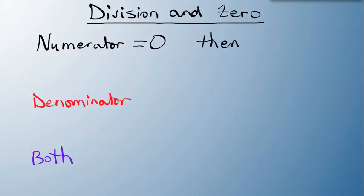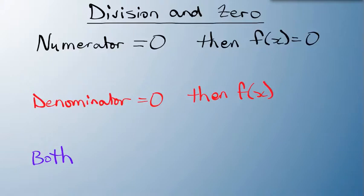Zero over two is zero. If my denominator equals zero, then it's undefined because you can't take two and divide it by zero. So it's undefined.